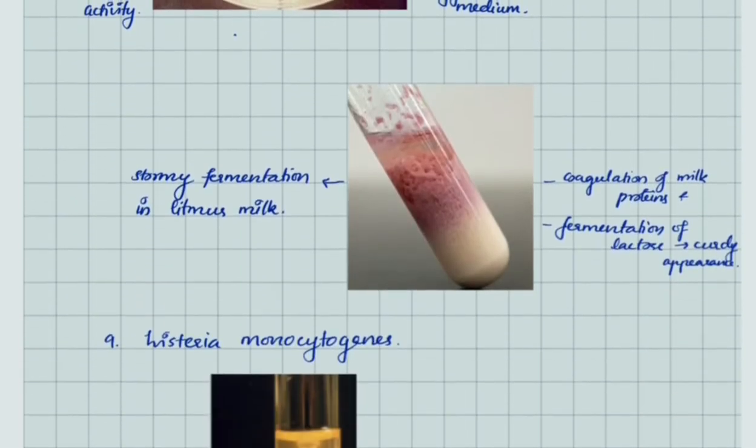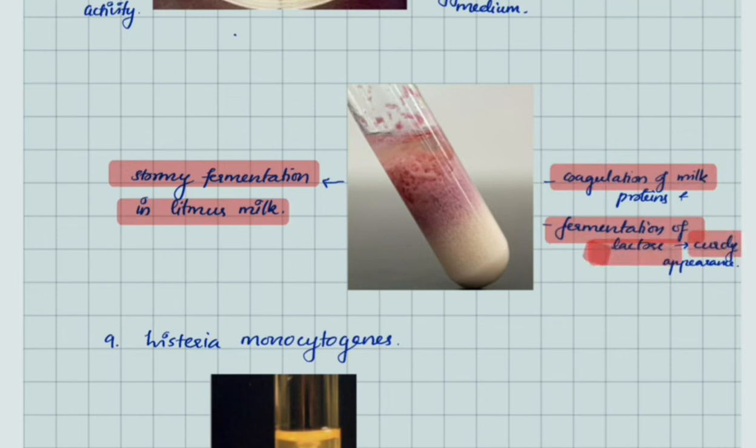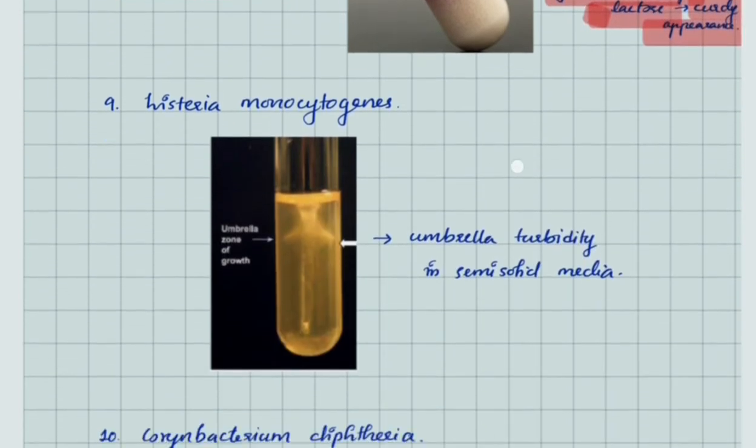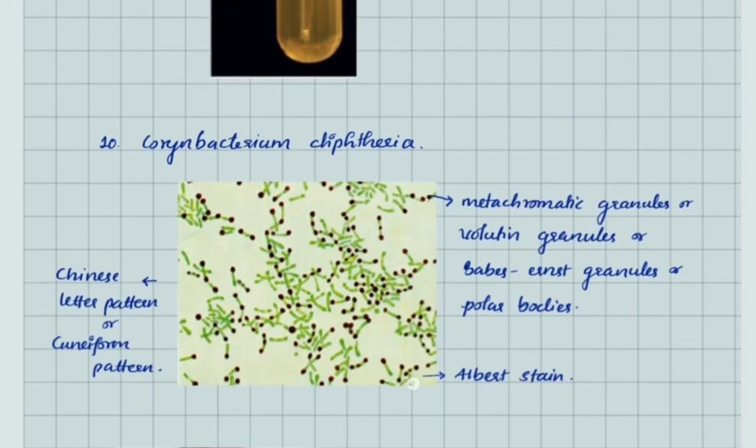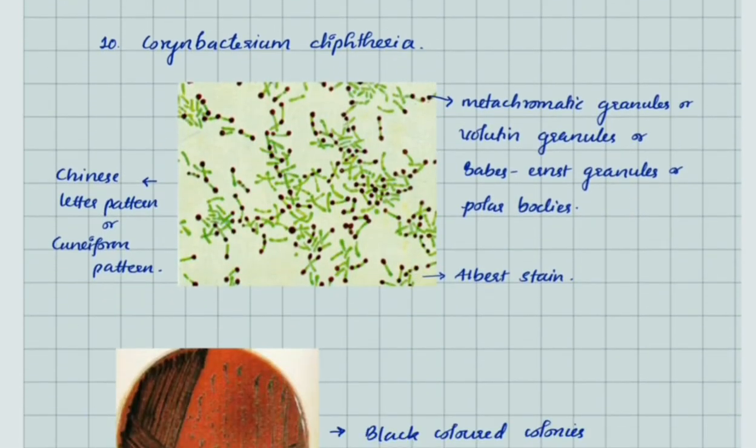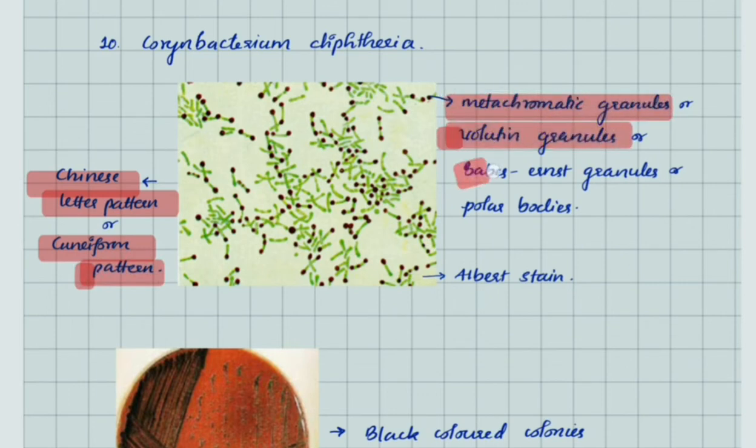Next, stormy fermentation in litmus milk due to coagulation of proteins and fermentation of lactose gives a curdy appearance. Listeria monocytogenes shows umbrella turbidity in semi-solid media. Corynebacterium diphtheriae has characteristic Chinese letter pattern or cuneiform pattern due to metachromatic granules or volutin granules or Babes-Ernst granules or polar bodies. Here we use Albert stain.